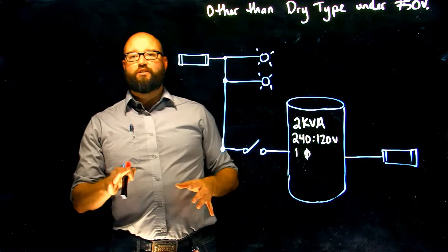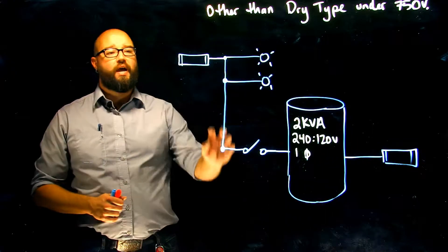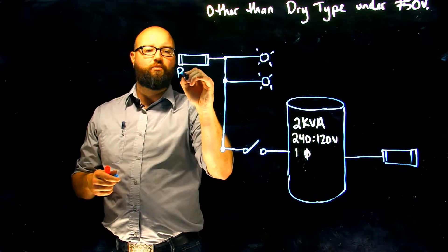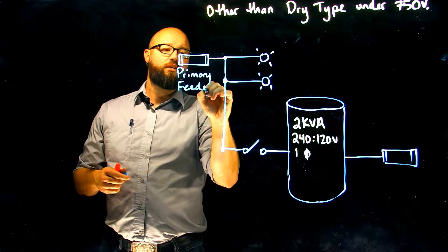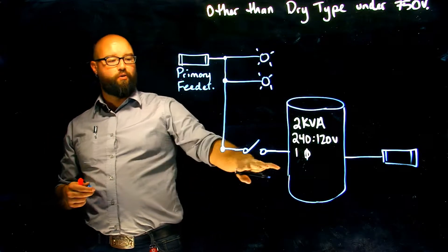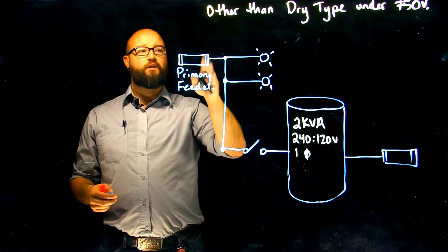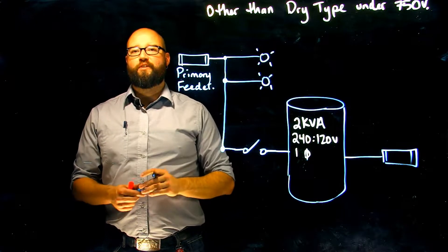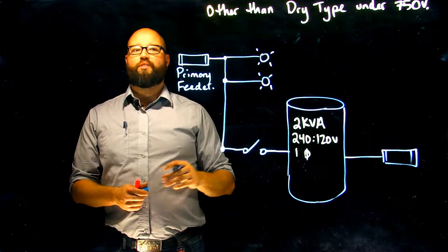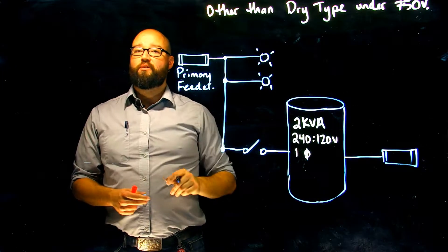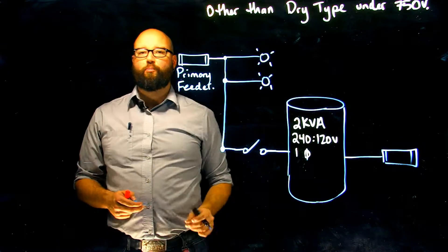What we're going to need to do is calculate our secondary overcurrent protection as well as our primary feeder — we're going to call this right here our primary feeder. This is different than our primary overcurrent that would individually protect this transformer. This primary feeder may have other loads coming off of it, but this is the rule that deals with what is the maximum size it can be in order to omit this primary individual protection.